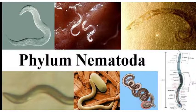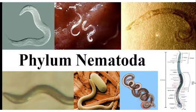The body of nematodes is circular. As we learned about Platyhelminthes — 'platy' means flat and 'helminth' means worm — here 'nemati' means round, so Nemathelminthes are round worms, almost cylindrical in shape.